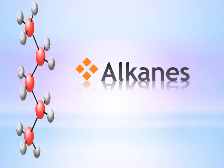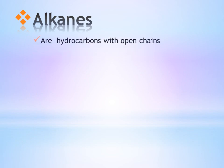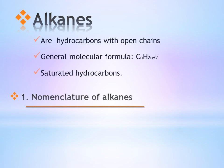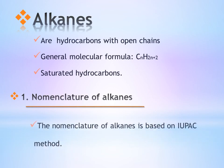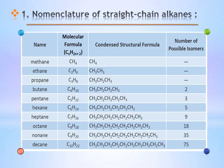Now, let us know more about the alkane family. Alkanes are hydrocarbons with open chains. Their general molecular formula is CnH2n+2, where n is the number of carbon atoms. They are saturated hydrocarbons. Alkanes are named according to the IUPAC method. The first 10 alkanes start from methane to decane, from carbon number 1 to carbon number 10.